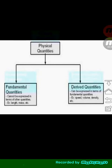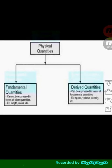They are independent on their own, while derived quantities can be expressed in terms of fundamental quantities. Examples of this include speed, volume, and density.